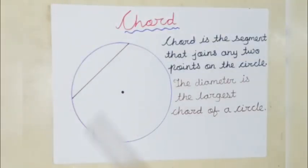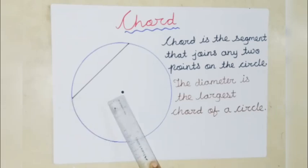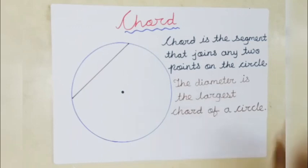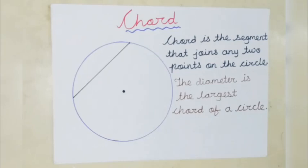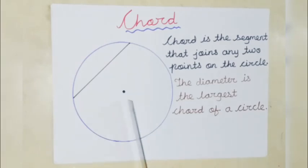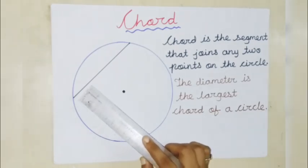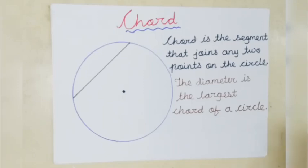Chord is the segment that joins any two points on the circle. But you can see, chord is not touching the center of a circle — it is joining any two points on the circle. The diameter is the largest chord of a circle. Whether chord is passing from the center? No. Even radius is touching the center, and diameter is passing from the center. But chord is not even touching the center of a circle.